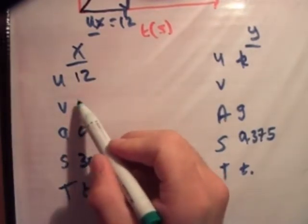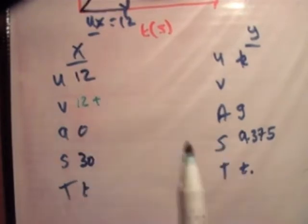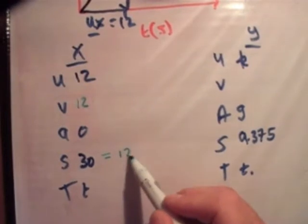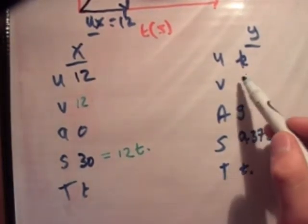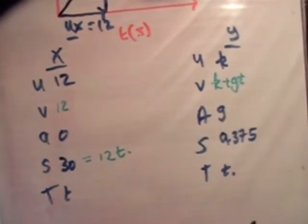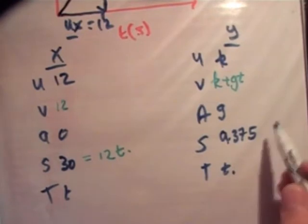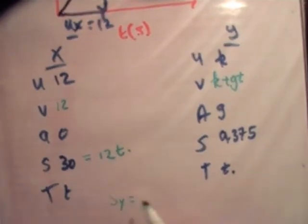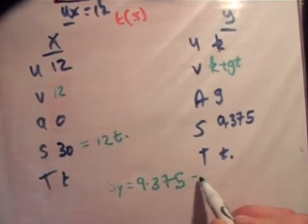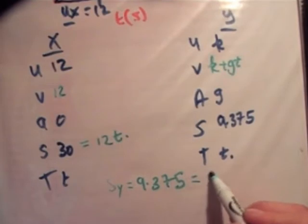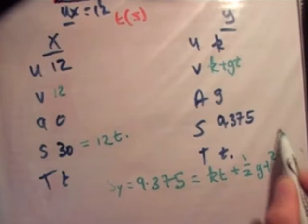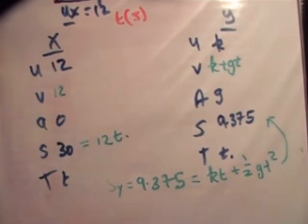So let's go ahead and do that. I'll say v is equal to u plus 0t. So that's 12 again of course. And this here is equal to 12t. If you do the same over here, it's u which is k plus gt. And this here is, s sub y is equal to 9.375 is equal to kt plus half gt squared.